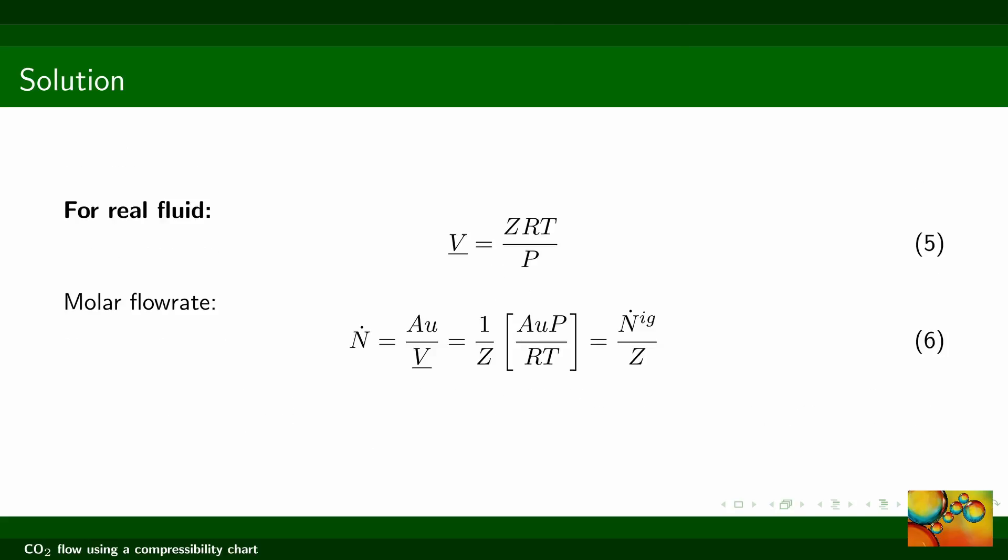The second item of this problem asks us to use a compressibility chart. We apply the compressibility by using that the molar volume is equal to Z RT over P, where Z represents the compressibility factor. With some steps of algebra, we identify in equation 6 that the term between brackets was the solution for the ideal gas case, and therefore the molar flow rate when we use the compressibility chart is equal to the molar flow rate of the ideal gas case divided by the compressibility factor.